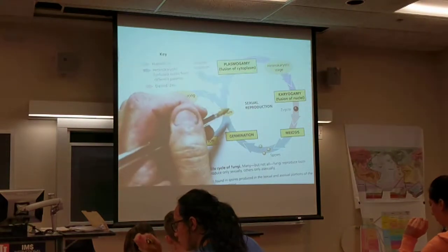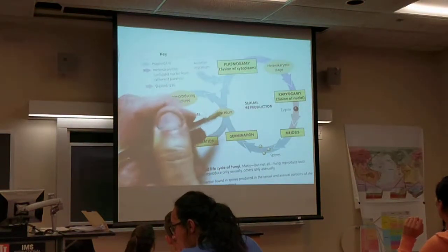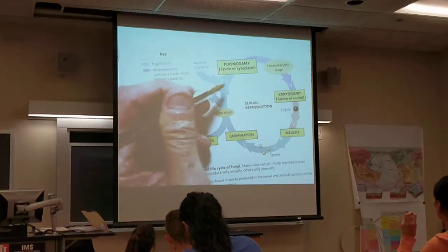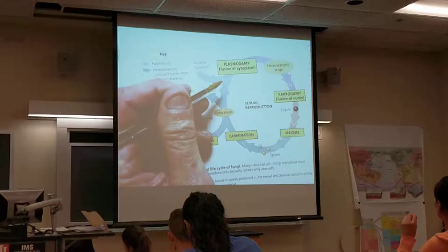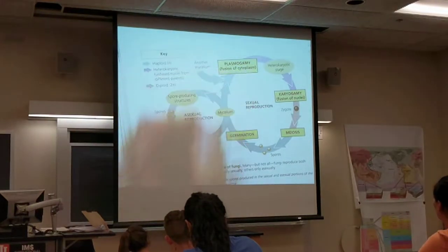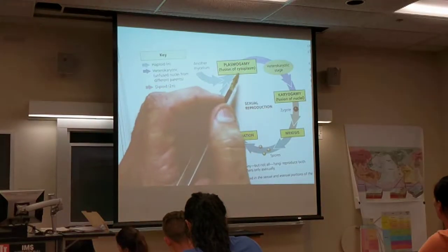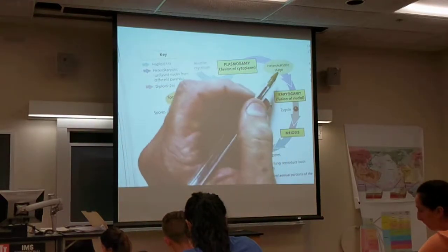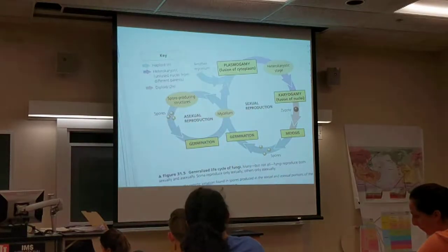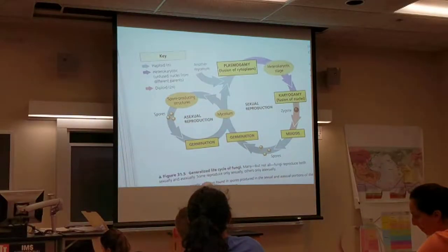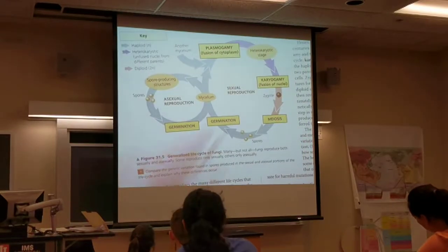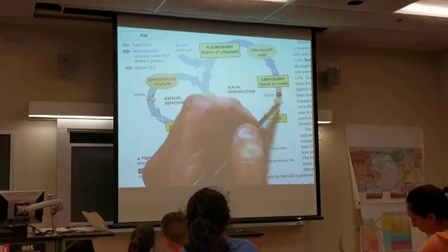But usually when conditions are changing, maybe drying out, two different hyphae from different mycelia can meet. They fuse their cells — that's called plasmogamy — so now you have more than one nucleus in some cells, which is called the heterokaryotic stage, meaning at least two nuclei in a cell. Later on the nuclei will fuse, giving you the diploid stage.